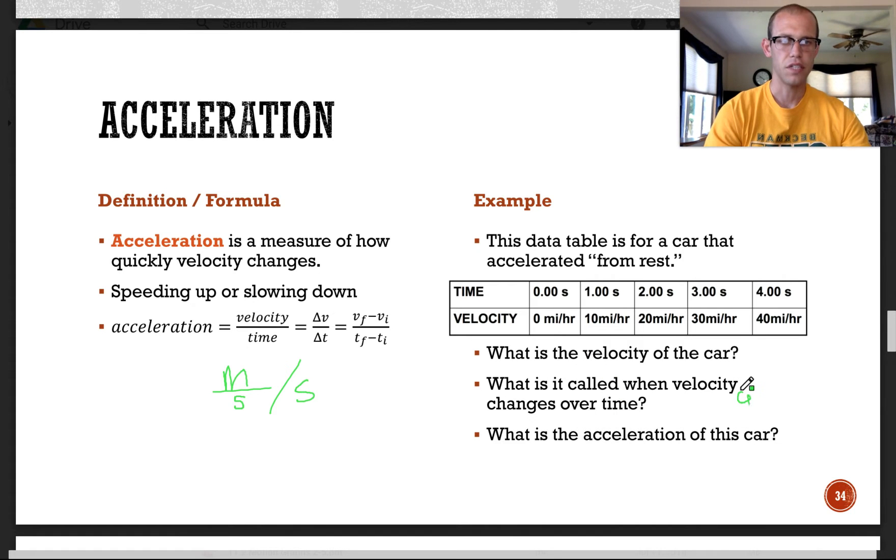That is called acceleration. So we talked about a label of meters per second per second or meters per second squared, which we normally use in SI units. However, it doesn't have to be that. For this example, when we calculate acceleration, it would be in miles per hour per second. So every second that passes, our velocity is changing that many miles per hour.